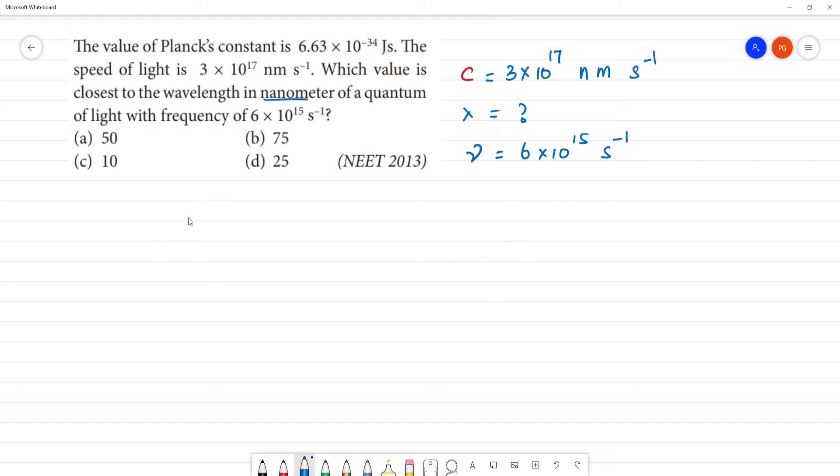Frequency nu is equal to c by lambda, we can say lambda is equal to c by nu, which is equal to c, 3 into 10 to the power 17 nanometer second inverse by nu value, 6 into 10 to the power 15 second inverse. Now the second inverse cancels.